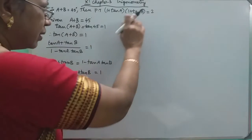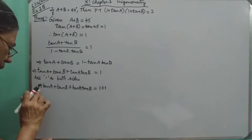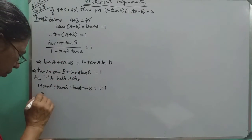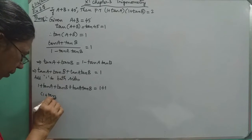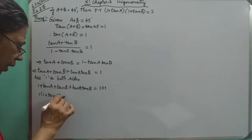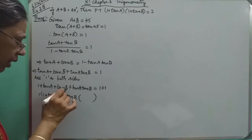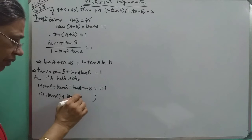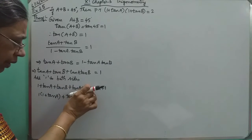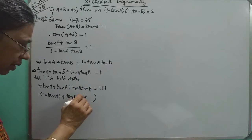Now, this is nothing but this. That is, we can group these two. So 1 plus tan A, here we have 1. In these two, tan B is common. So if tan B is taken out instead of this we will put 1 here. When tan B is taken out, the left out is tan A.